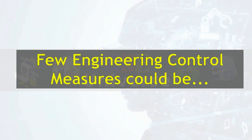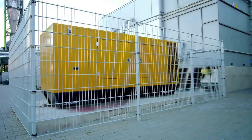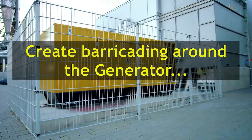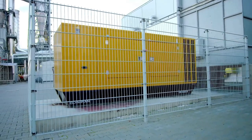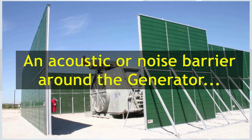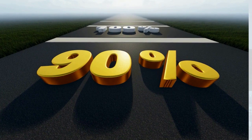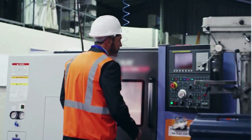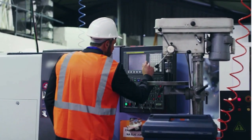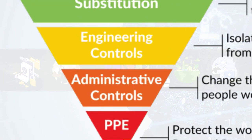A few engineering control measures could be: number one, relocate the noisy generator inside a room if there is a possibility; or number two, create barricading around the generator — the barricading distance will depend on the radius from where the work crew will not be exposed to noise beyond the recommended occupational noise exposure limit; or use noise-absorbing material or acoustic barriers around the generator. However, all these engineering control measures do not guarantee 100% protection and require additional controls. If any work crew enters the room or barricaded area, they will be exposed to noise, so we need to move to the next lower level of control.